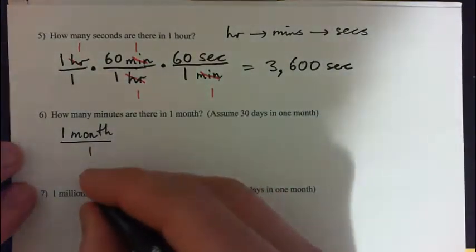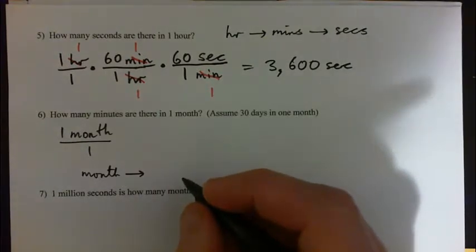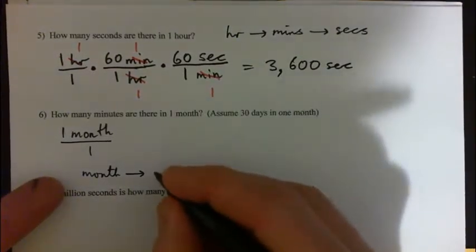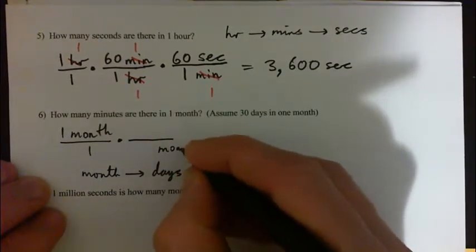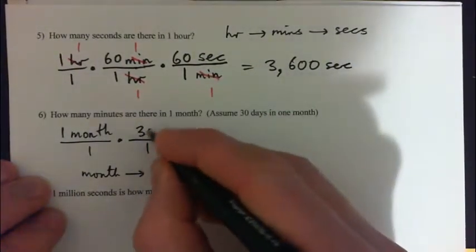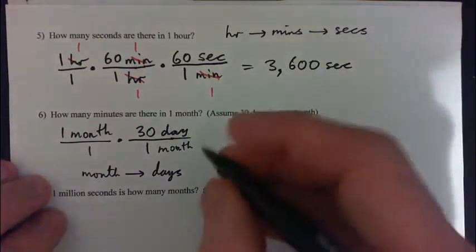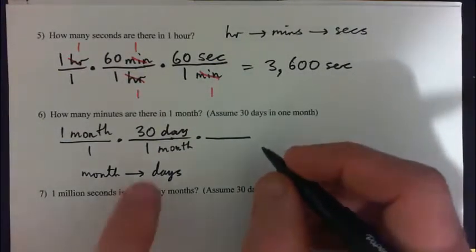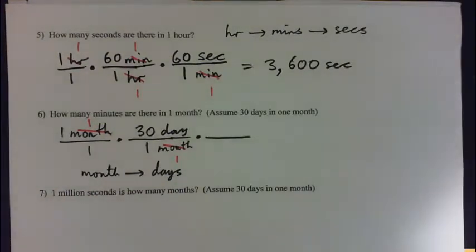We want to go from months to minutes. Can we convert to minutes right away? A lower measurement than a month would be days — we're assuming 30 days in one month. So we go from months to days first; that gets us closer to minutes. We multiply by something with months in the denominator, and in one month there are 30 days. Of course, if you knew the specific month it could be 31, 28, or even 29 on a leap year, but we'll assume 30 for an average month.